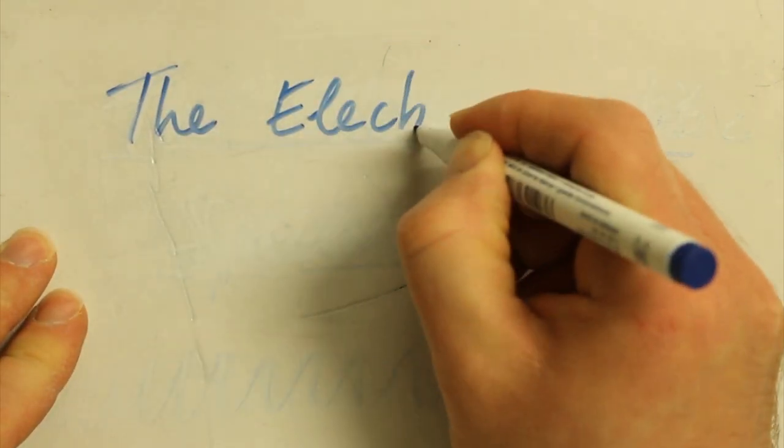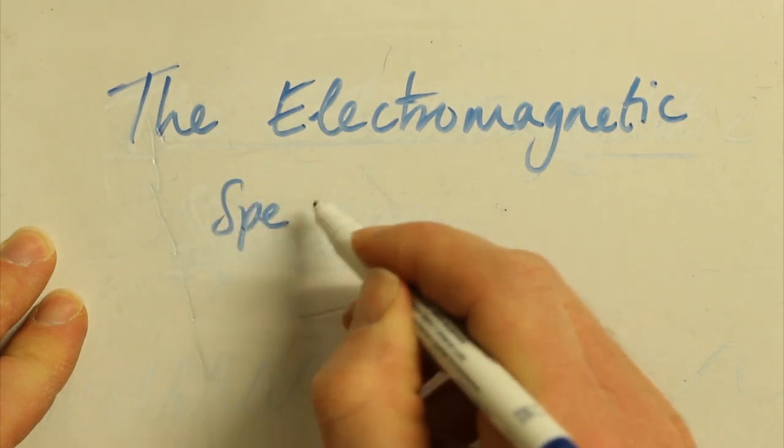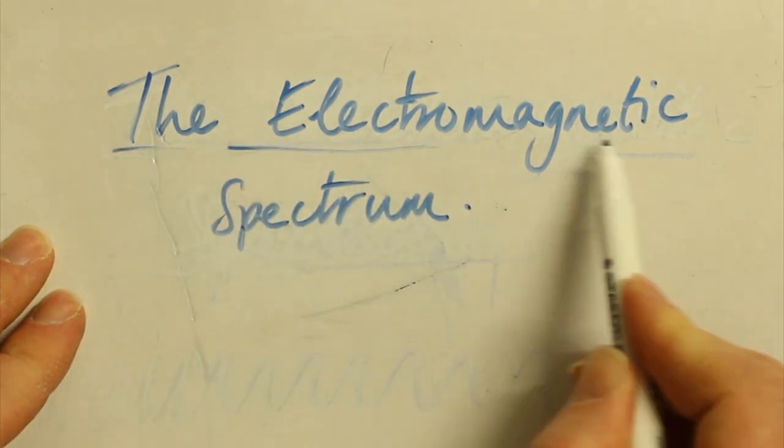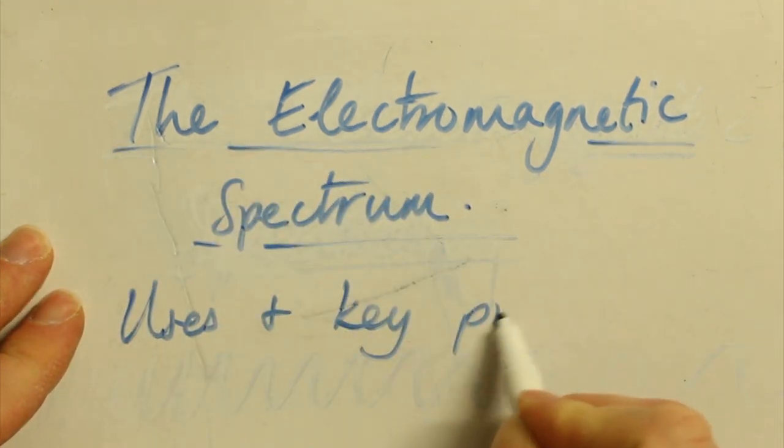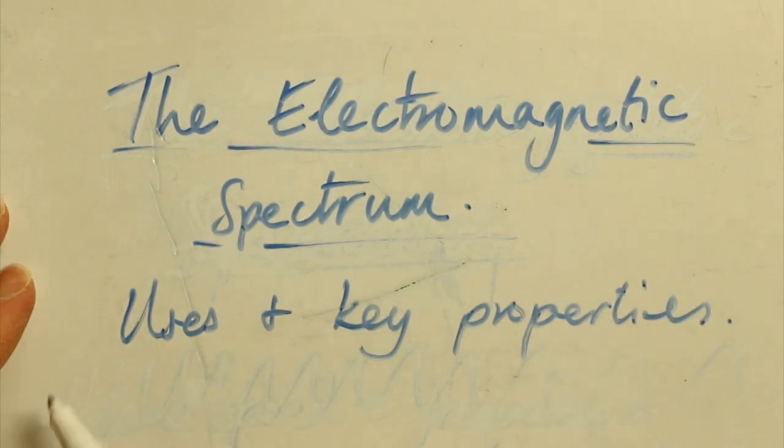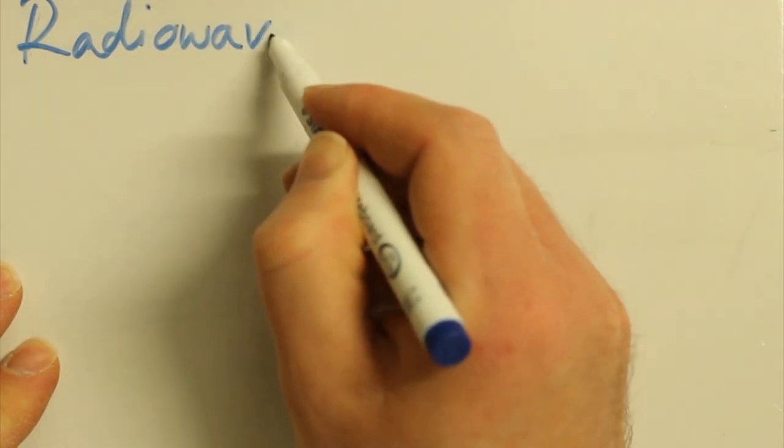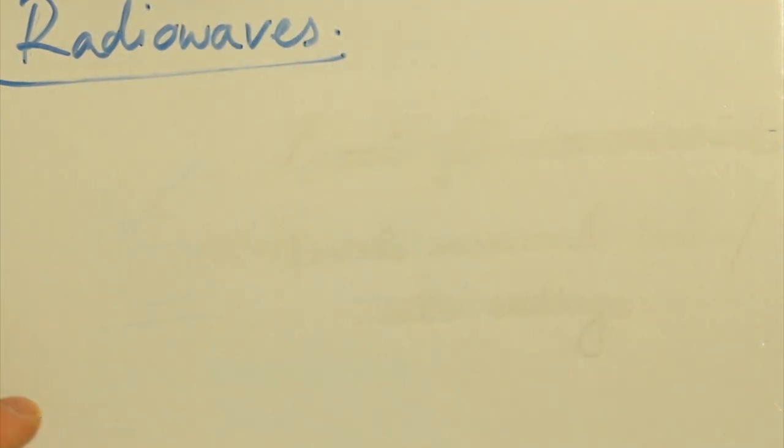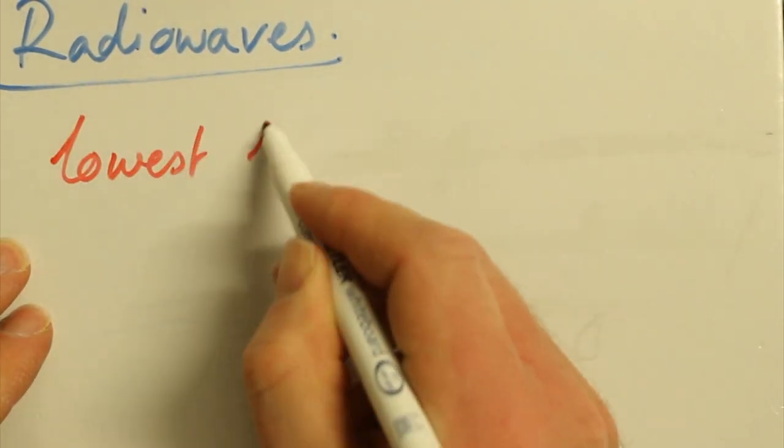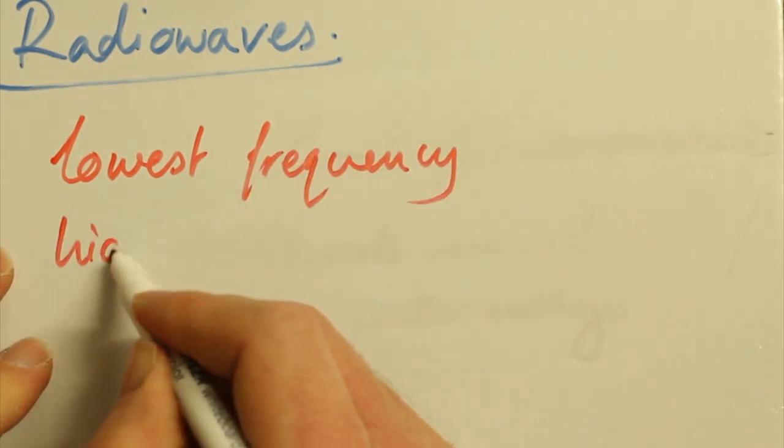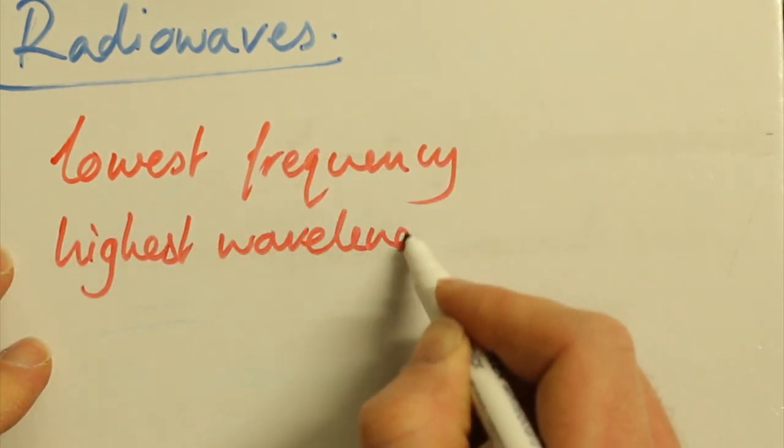This video will take you through the electromagnetic spectrum and tell you some of the uses and properties of each portion. We're going from lowest energy to highest energy. It's a really good application of the wave speed equation here, which is wave speed equals frequency times wavelength. All of these waves travel at the speed of light, so increasing frequency will always mean decreasing wavelength. As we go from radio waves through to X-rays, you will see that the wavelength will decrease and the frequency will increase.